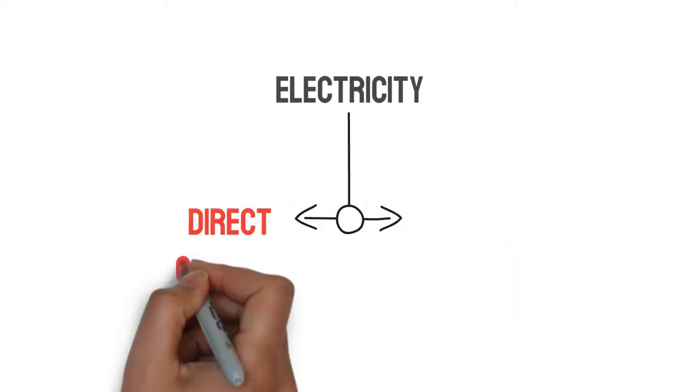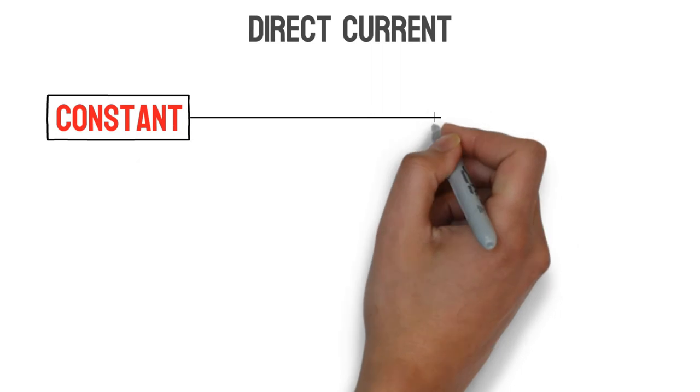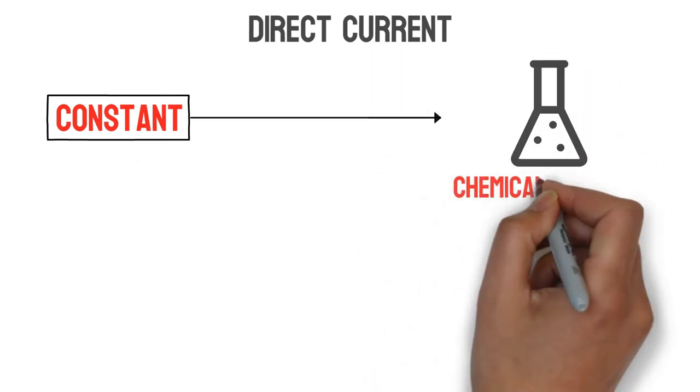There are two kinds of electricity: direct current and alternating current. Direct current is constant, even flowing current that travels in one direction only and produces a chemical reaction.